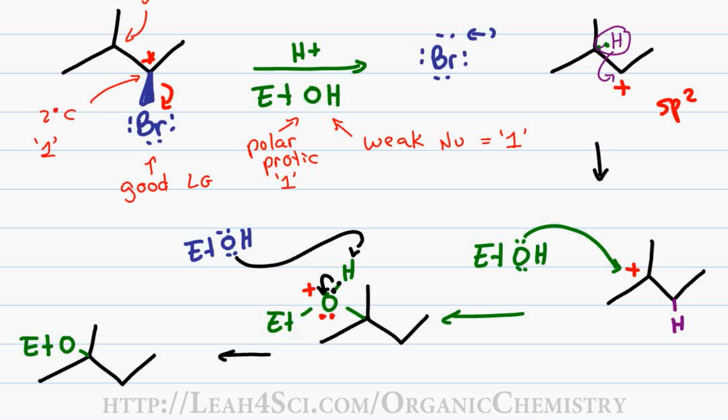However, since we had a carbocation rearrangement and the carbon that eventually got attacked by ethanol has two methyl groups, we no longer have four unique substituents and therefore have an achiral product.